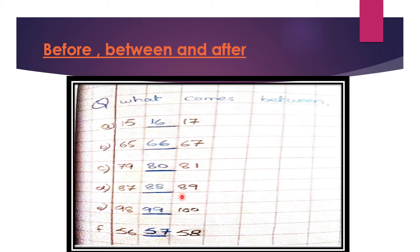87-89, we have written 88. 98-100, the answer is 99. 56-58, the answer is 57.